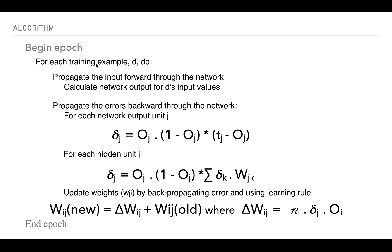The algorithm is: we begin an epoch and for each training example d, we propagate the network input through the network and calculate the network's output for d's input values. So we will get the output for the training example d.